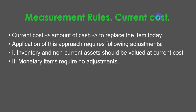Current cost model. Current cost is the amount of cash needed to replace the item today. The application of this approach requires the following adjustments: inventory and non-current assets should be valued at current cost, while monetary items require no adjustments.